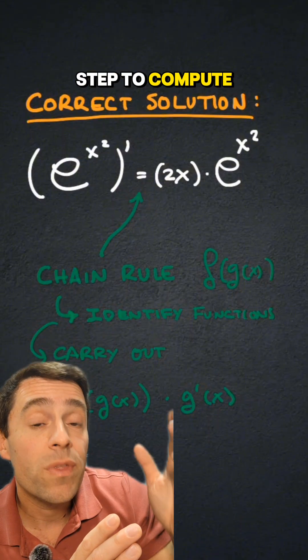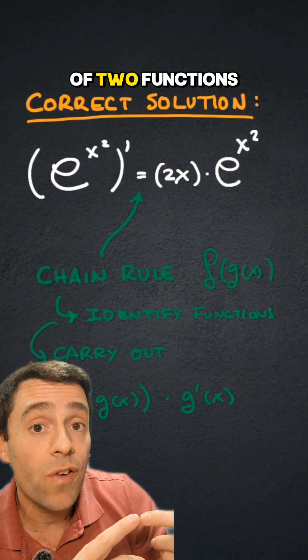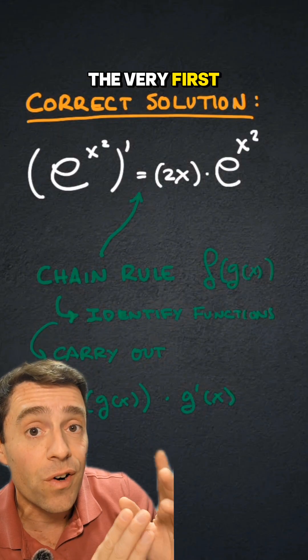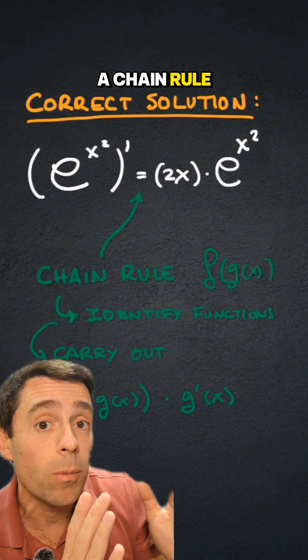The very first step to compute this derivative is to realize that e to the x squared is a composition of two functions and we're going to use the chain rule. So that is the very first step for the student: to identify that this is a chain rule problem.